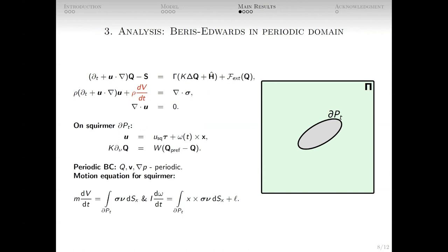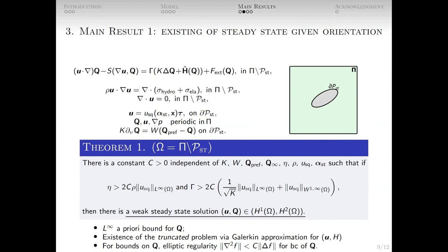Our first main result is about solutions of the steady-state problem. That is, about the swimmer moving with constant velocity in a given direction. We showed that under certain conditions, which we may call smallness conditions on slip velocity U sub squirmer, weak solutions to the steady-state problem exist.